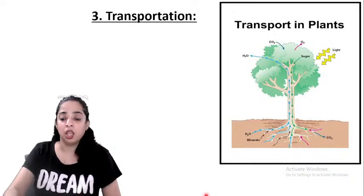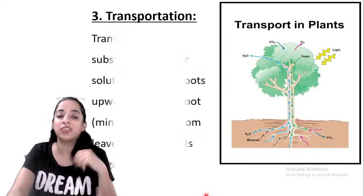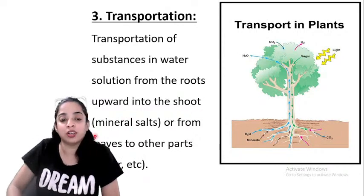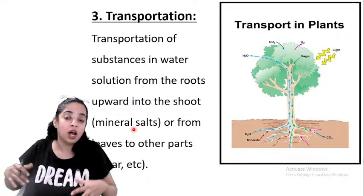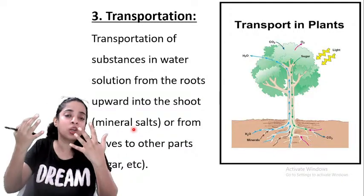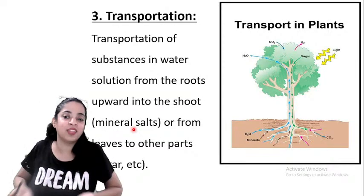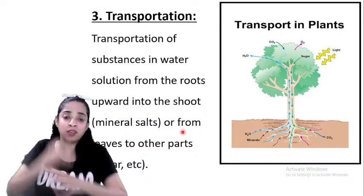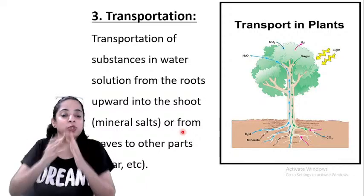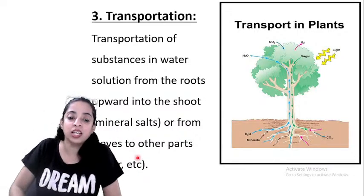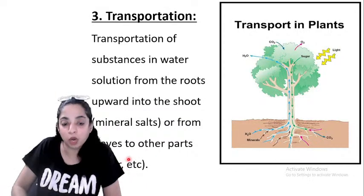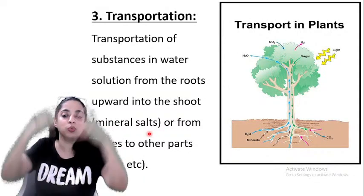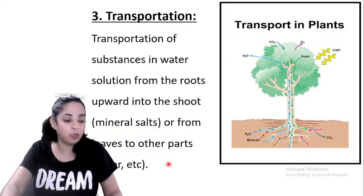The next function is transport in plants. Water helps in transportation of substances in water solution from the roots upward into the shoot. Mineral salts dissolve in water and are carried upward. Also, whenever food is prepared by the leaves, water helps transport the prepared food from leaves to all parts of the plant, and helps transport mineral salts from the soil to the shoots and leaves.